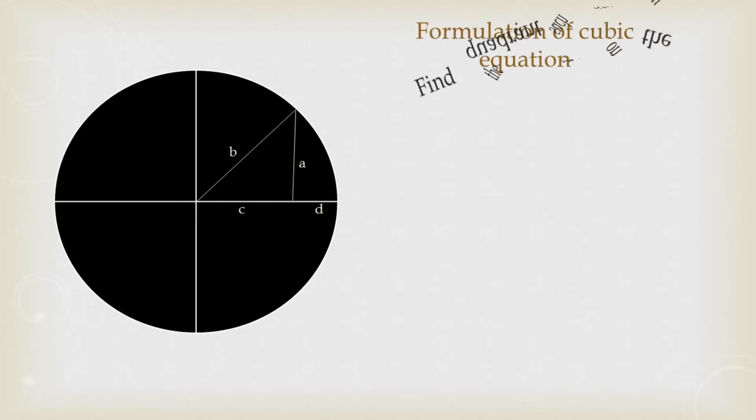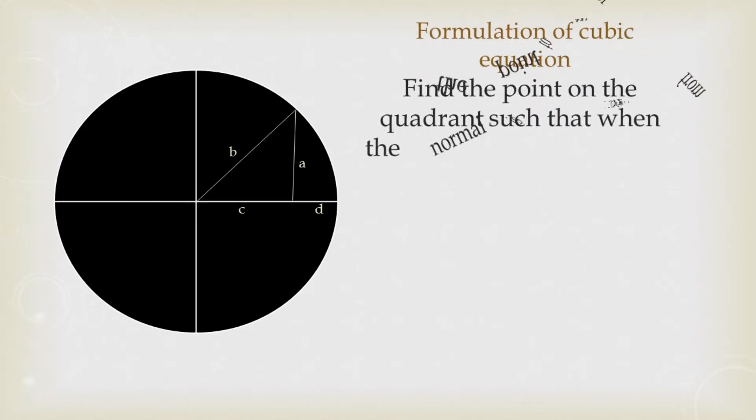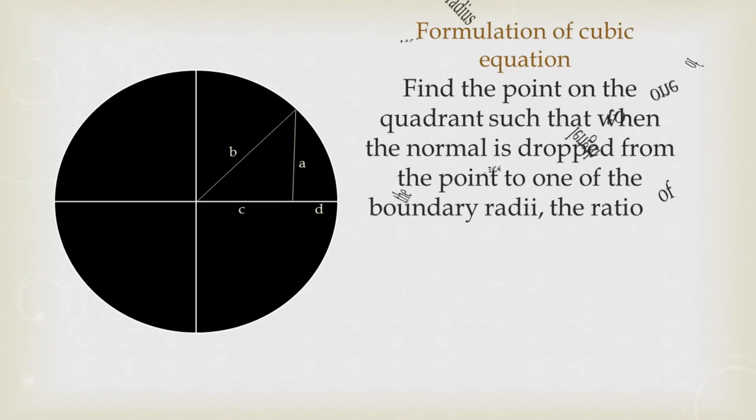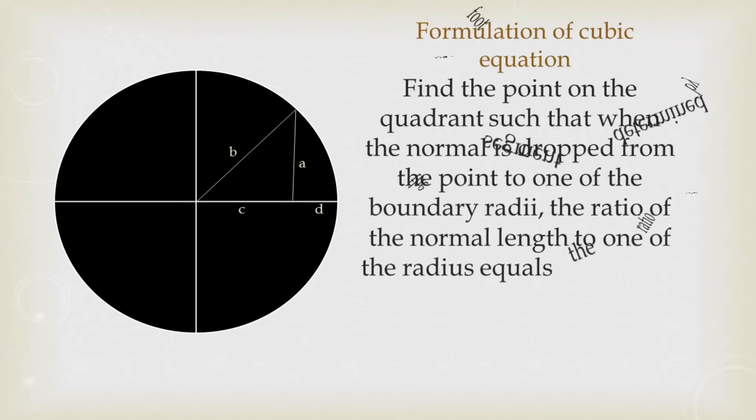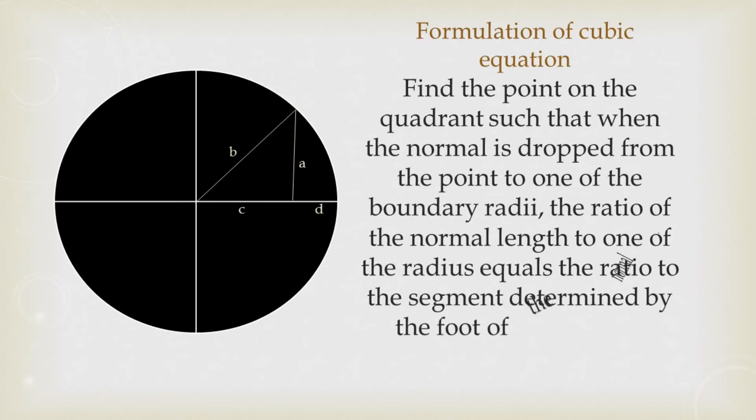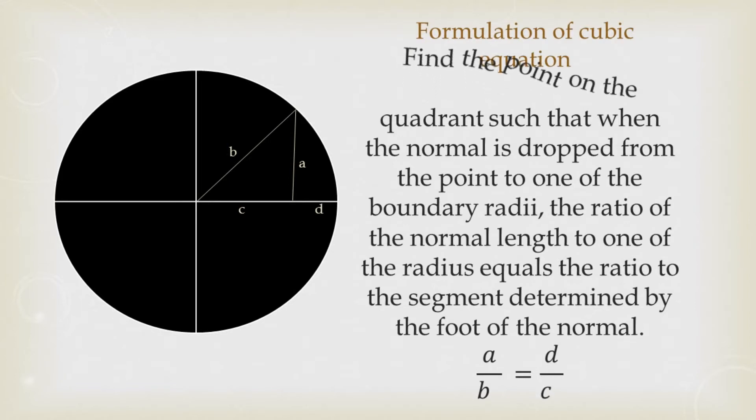The ratio of the normal length to one of the radius, the ratio of the normal length which is A to one of the radius which in this case can be B, is equal to the ratio of the segment which is determined by the foot of the normal.